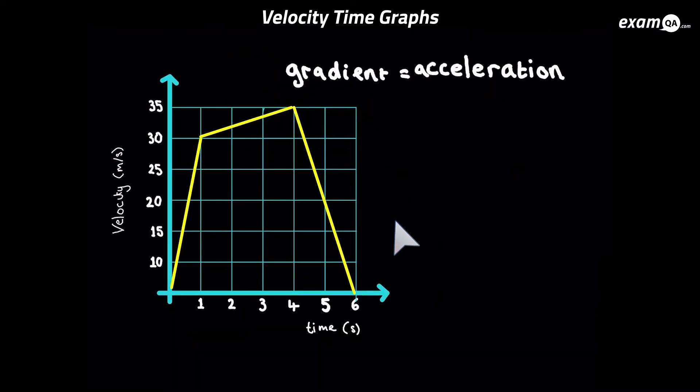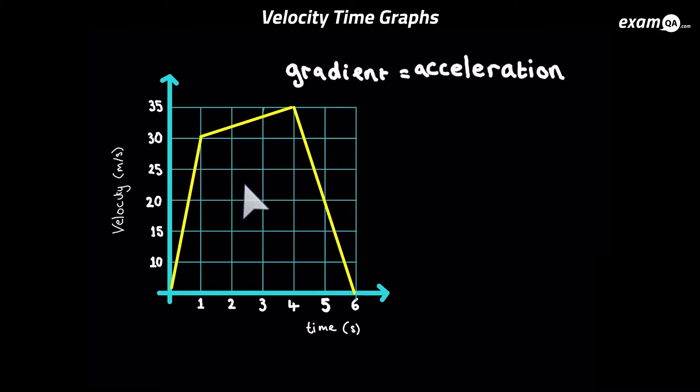Now here's the next property: the gradient of the velocity-time graph is acceleration. Looking at this journey you can see different parts have different accelerations — the steepness is changing.